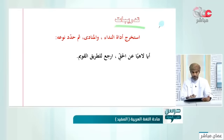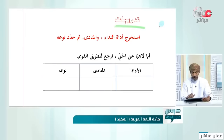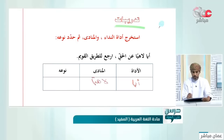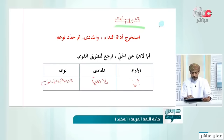أيا لاهياً عن الحق ارجع للطريق القويم. الأداة 'أيا' والمنادى 'لاهياً'. نوعه شبيه بالمضاف لأنه عمل فيما بعده.